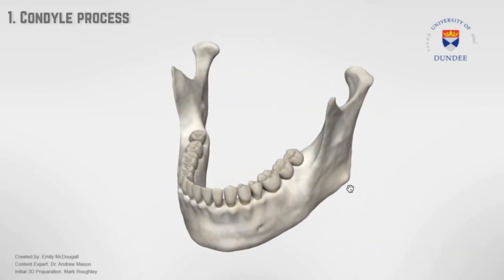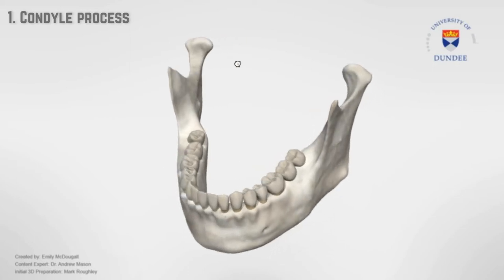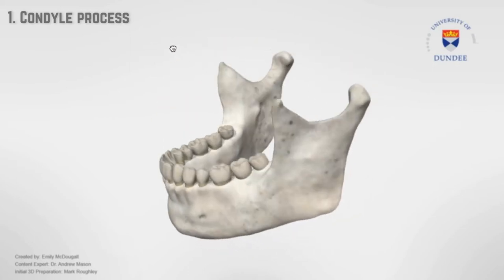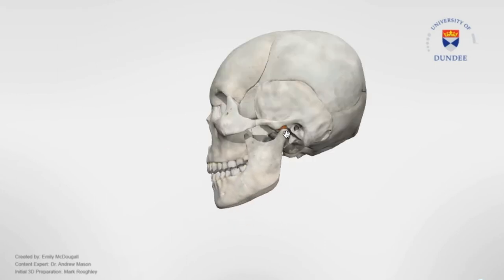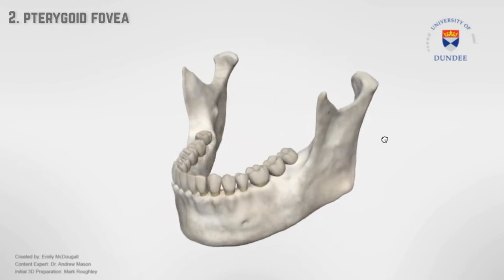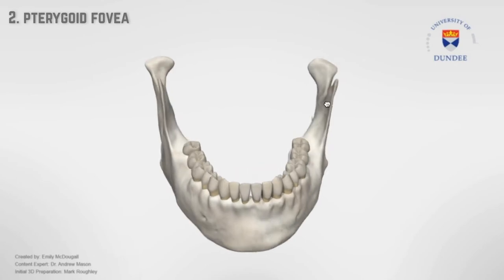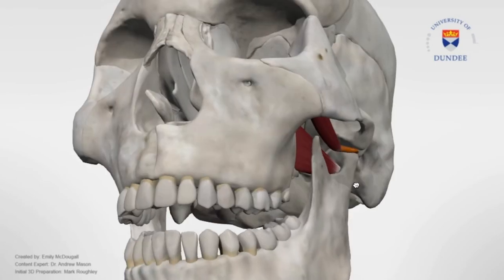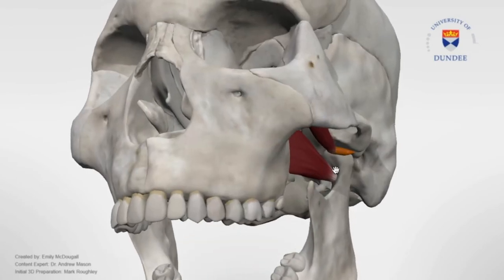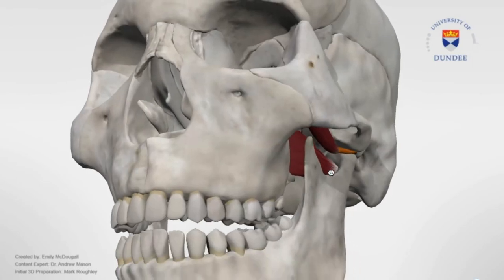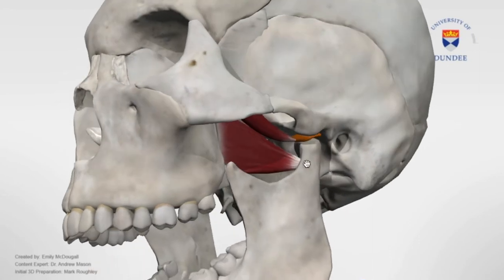Condyle process — this comprises of the head, neck and the pterygoid fovea, and the head articulates with the glenoid fossa in the temporal bone. Pterygoid fovea lies on the anterior surface of the condylar head and is the site for attachment of the lateral pterygoid muscle.